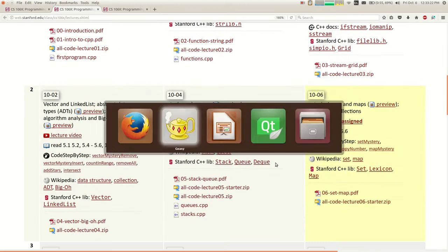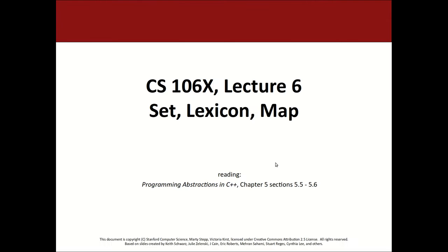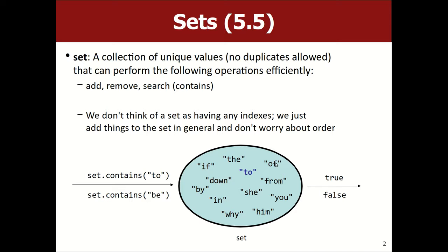Let's talk about sets and maps. This comes from Chapter 5. So what's a set? It's a collection that has unique values — no duplicates. A set is generally built to optimize a small set of operations: adding and removing elements, and testing for membership — asking whether something is in the set or not. And we saw that if a collection has fewer operations, it can implement them really efficiently, as we saw with stacks and queues.